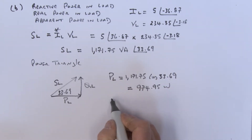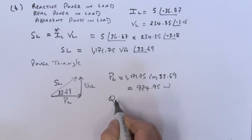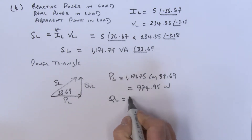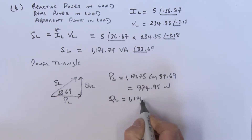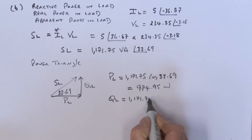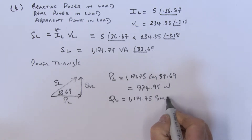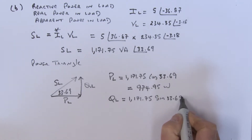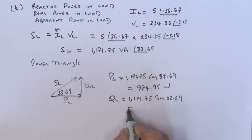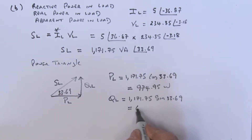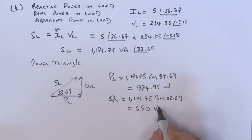Now we do the same for reactive power in the load. QL is equal to 1171.75 times sine of 33.69 degrees, which works out to 650 volt-amps reactive.